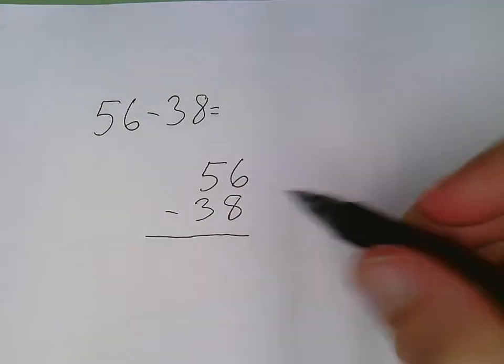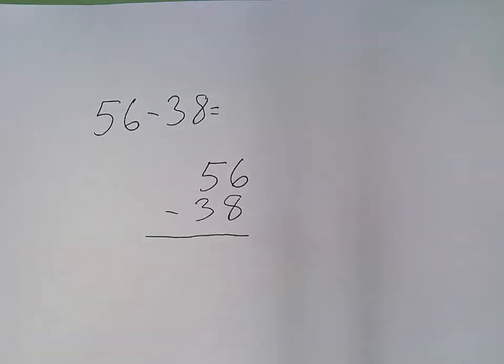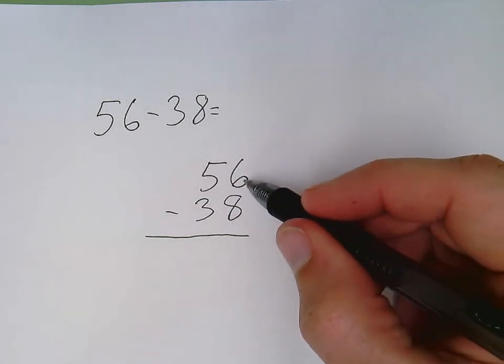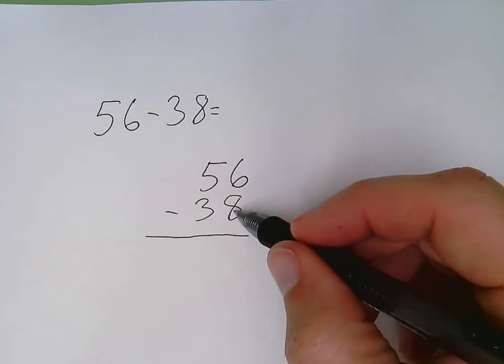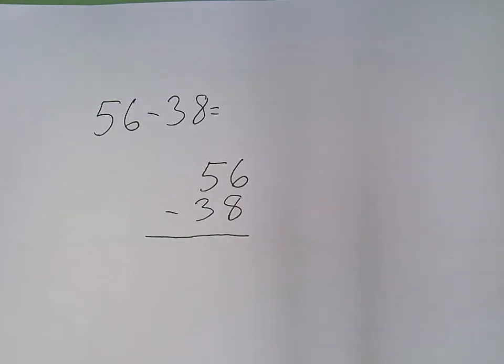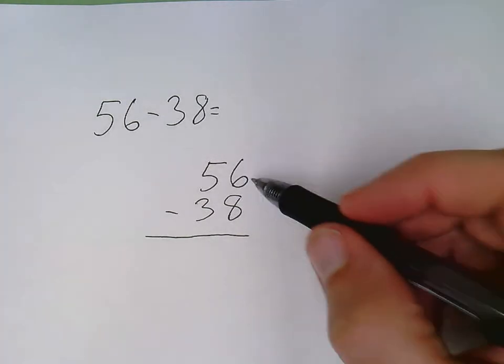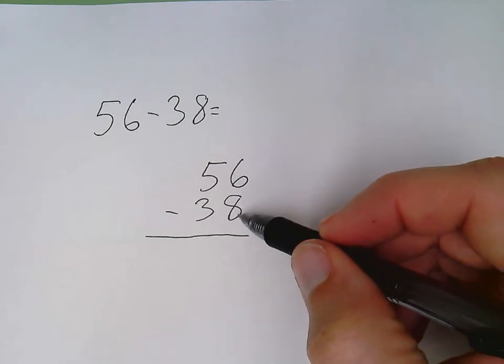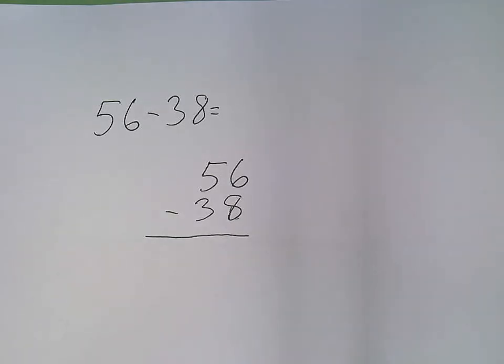When I subtract I always start in the ones column off to the right. In every single column I ask myself a very important question. Can I do it? Can I subtract? Can I do 6 minus 8? For this one I cannot do that. If I have 6 cookies I can't possibly give someone 8 cookies. I can't take 8 away from the 6 so it will not work.